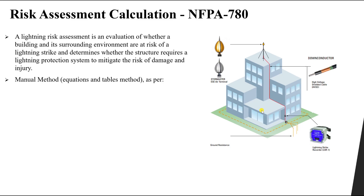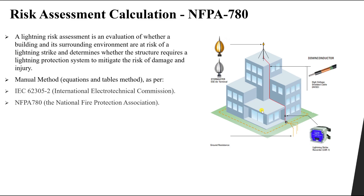We have manual methods using calculations, equations, and tables. This can be done using the IEC standard 62305 Part 2, which talks about how to do the risk assessment. You can also do the same risk assessment using NFPA, the National Fire Protection Association 780, which is the US standard.